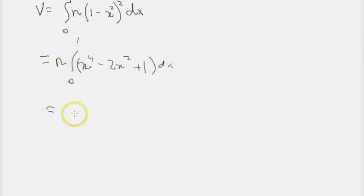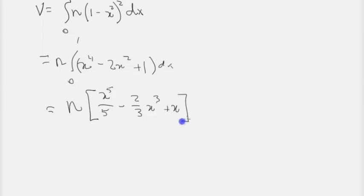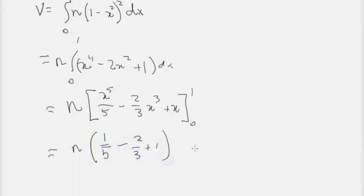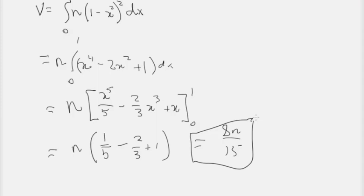Now we get the antiderivative: it turns into x to the fifth over 5 minus 2/3 x to the third plus x, evaluated between 0 and 1. When we plug in 0, everything turns to 0, so we just plug in 1. That gives pi times (1/5 minus 2/3 plus 1). When we give everything a common denominator, that comes out to 8pi over 15. That is the volume of the solid generated by rotating that function about the x-axis.